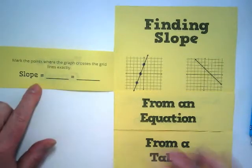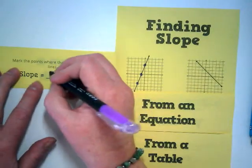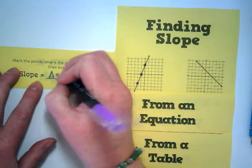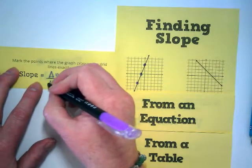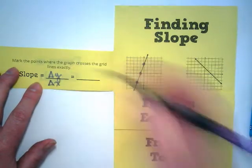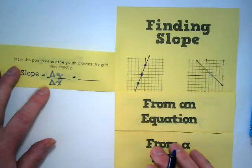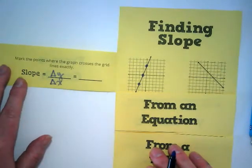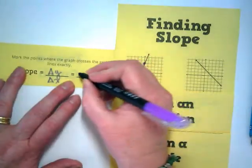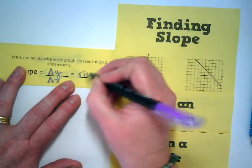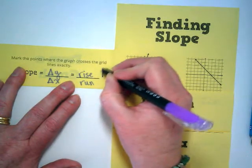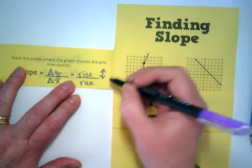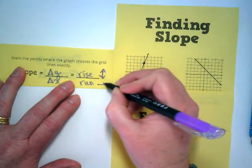And remember, a slope is a change in Y. That triangle is called a delta. It is a Greek symbol that means change. Change in Y over the change in X. We have been calling that the rise over the run. And we can show that visually as rise goes up or down and run goes left or right.